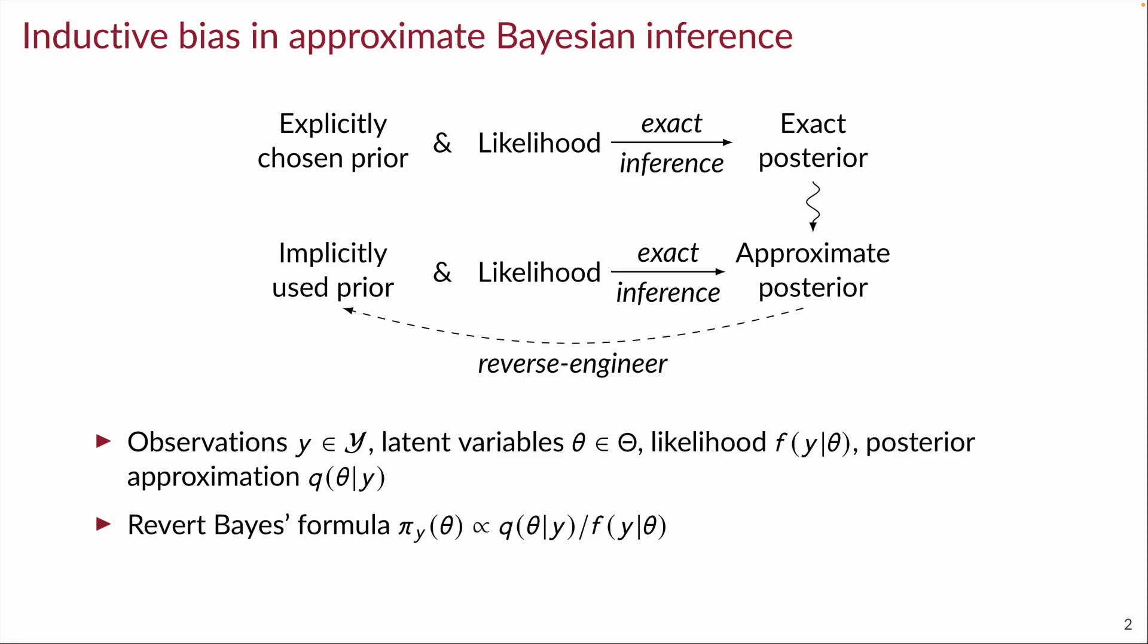The most direct way of reverse engineering this implicit prior is by going to Bayes' formula and using the approximations in place of the true posterior and then simply rearranging for the prior. By doing so, we get the distributions pi_y, but sadly these distributions generally depend on the observation y that we use to compute them.